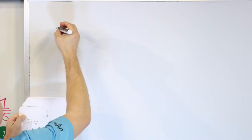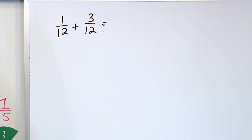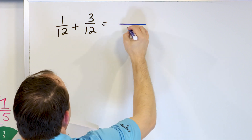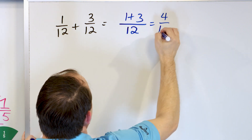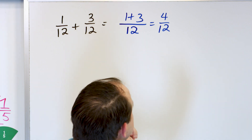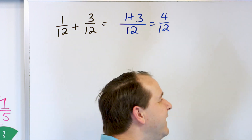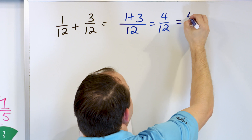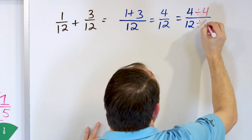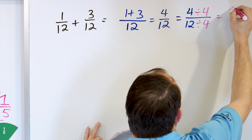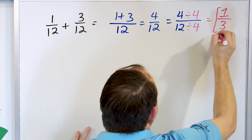Now this will be the last problem where we use our pictures. Let's take a look at 1 twelfth, and we'll add to that 3 twelfths. We have a 12 in the denominator, so we just write 12 in our answer, and then 1 plus 3 in the numerator, which equals 4 on the top, 12 on the bottom. Now I could divide top and bottom by 2, but I would have to divide by 2 again. Instead, let's just divide by 4. 4 divided by 4 is 1, and 12 divided by 4 is 3. So the answer here is 1 third.